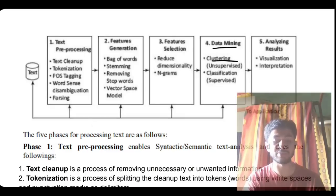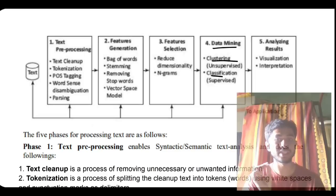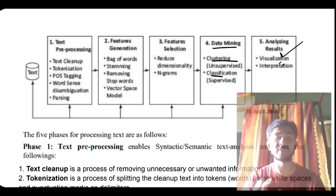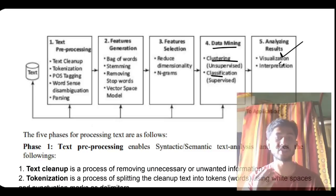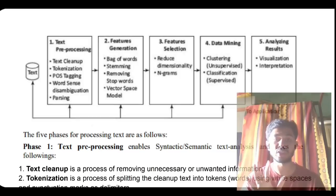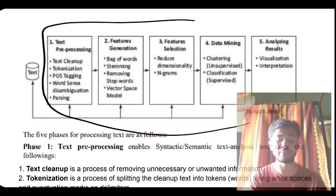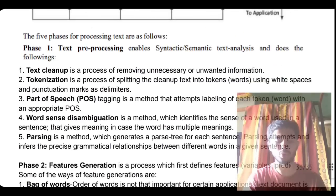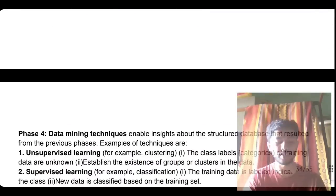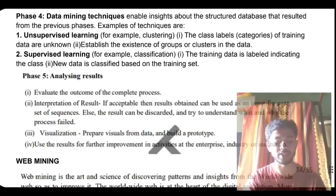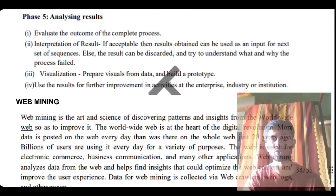Step (5) is data mining using clustering (unsupervised) or classification (supervised), after which you analyze and visualize the results, which are then sent to the concerned persons for further analysis. These are the five steps of text mining. Make sure to draw the diagram and explain each step for full marks. Additional detail is provided in the written document.